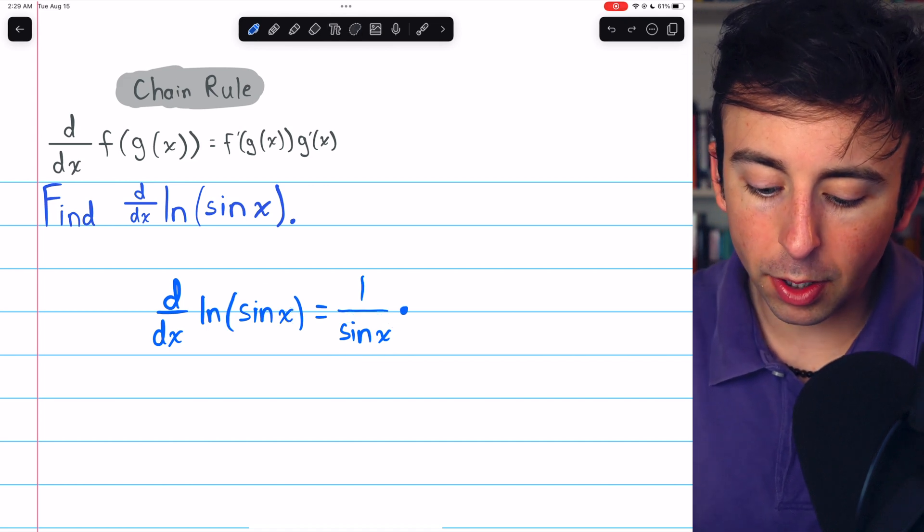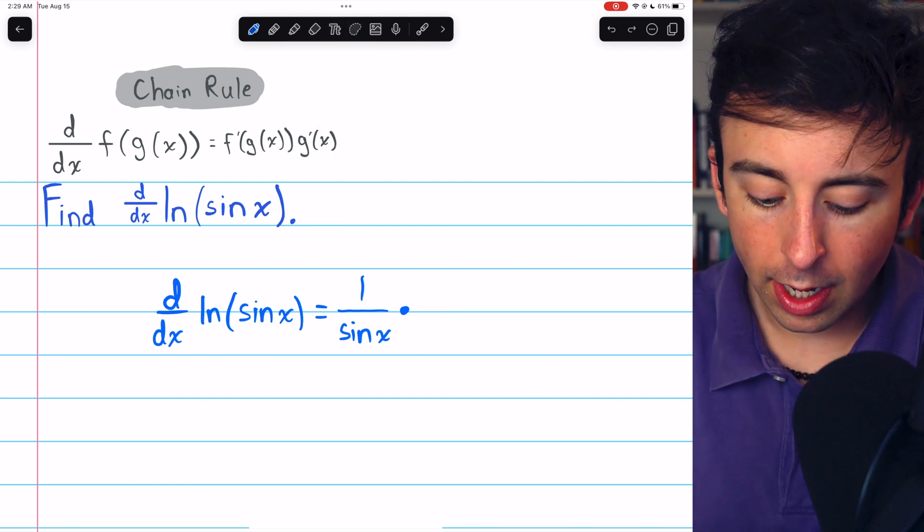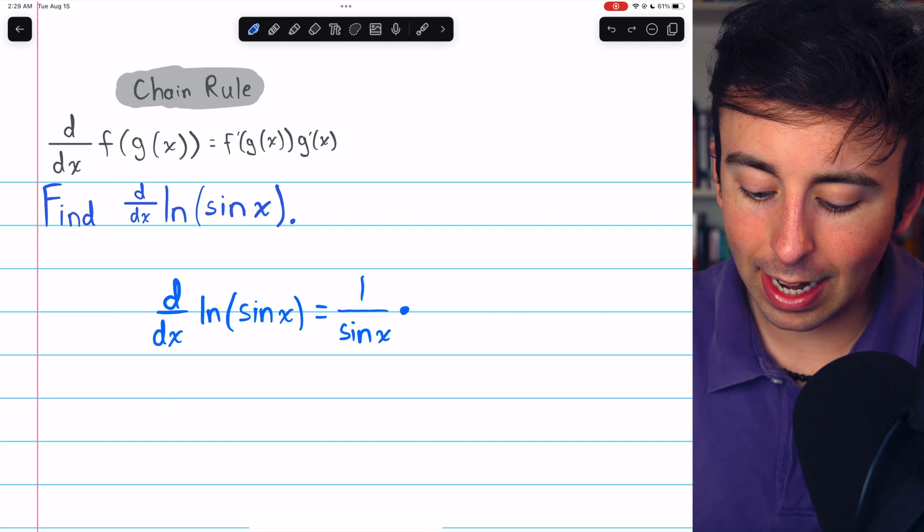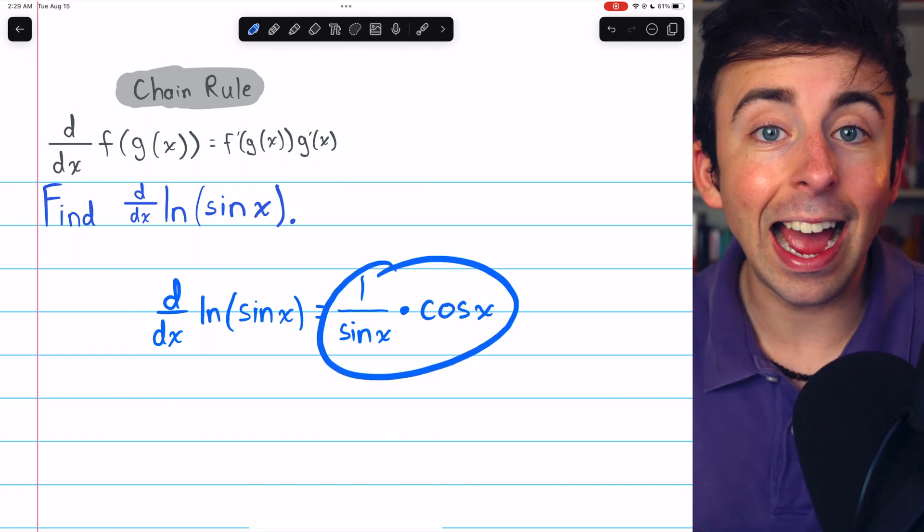Then we just need to multiply by g prime of x, the derivative of the inside function. The inside function is sine x, and its derivative is simply cosine x, and that is our derivative.